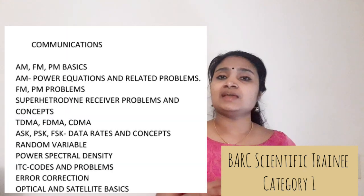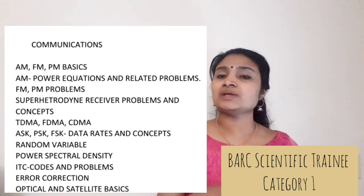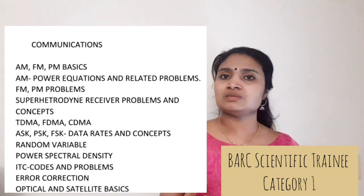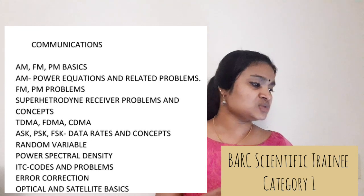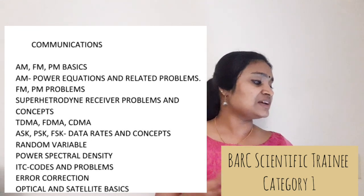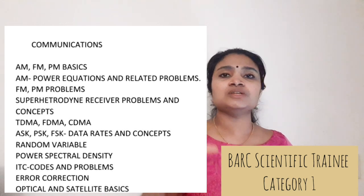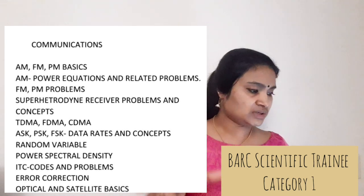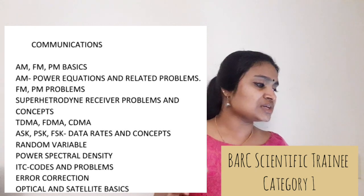From Communication Systems, study AM, FM, and PM — amplitude, frequency, and phase modulation basics. From the AM section, expect many questions including power equation problems. FM and PM numerical and theory questions are both important. Also cover the superheterodyne receiver problems, concepts of TDMA, FDMA, and CDMA, and ASK, PSK, FSK data rates. From digital communication, cover random variables and power spectral density.